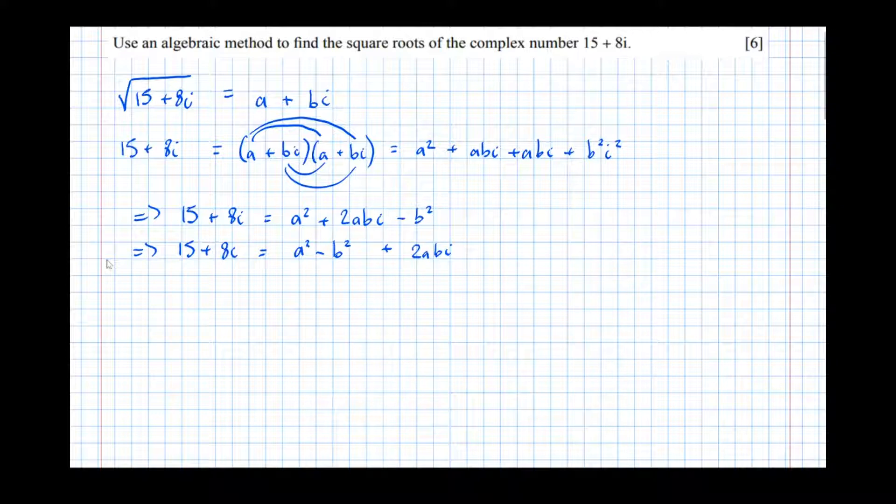So here, the real part, which is 15, has to match the real part here, which is a squared minus b squared. The imaginary part, which is 8, not 8i, but 8 - the imaginary part is the number in front of i. For those two sides to be equal, 8 must equal 2ab.